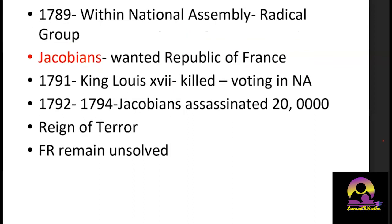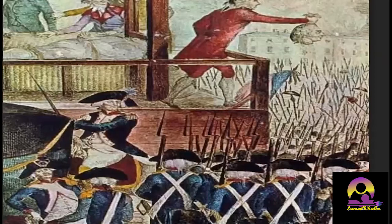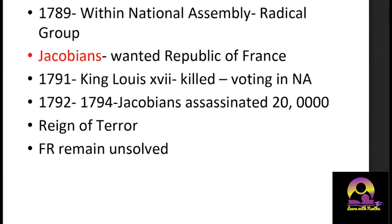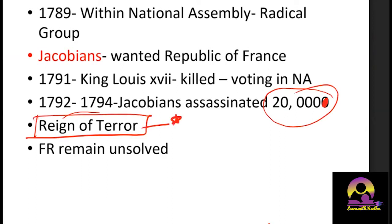The National Assembly voted to execute Louis XVI, and he was publicly hanged. This made the situation worse — neighbors thought that if even the king was not safe in France, what about ordinary people? The Jacobins declared that anyone not accepting the concept of a republic would be assassinated. Over two years, they assassinated almost 20,000 people — this period is called the Reign of Terror.